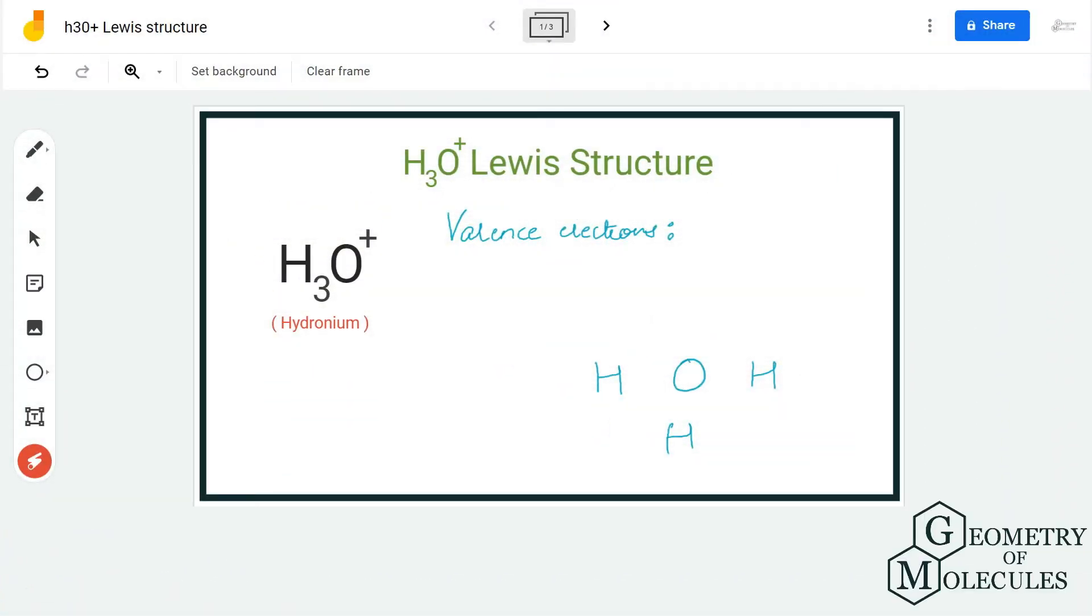Hi guys, welcome back to our channel. In today's video we are going to look at the Lewis structure for H3O+ ion. It is the chemical name of hydronium ion, and as it has a plus charge, it means it is giving away one electron. It is very important to notice all these things when you are coming up with the Lewis structure of molecules or ions.